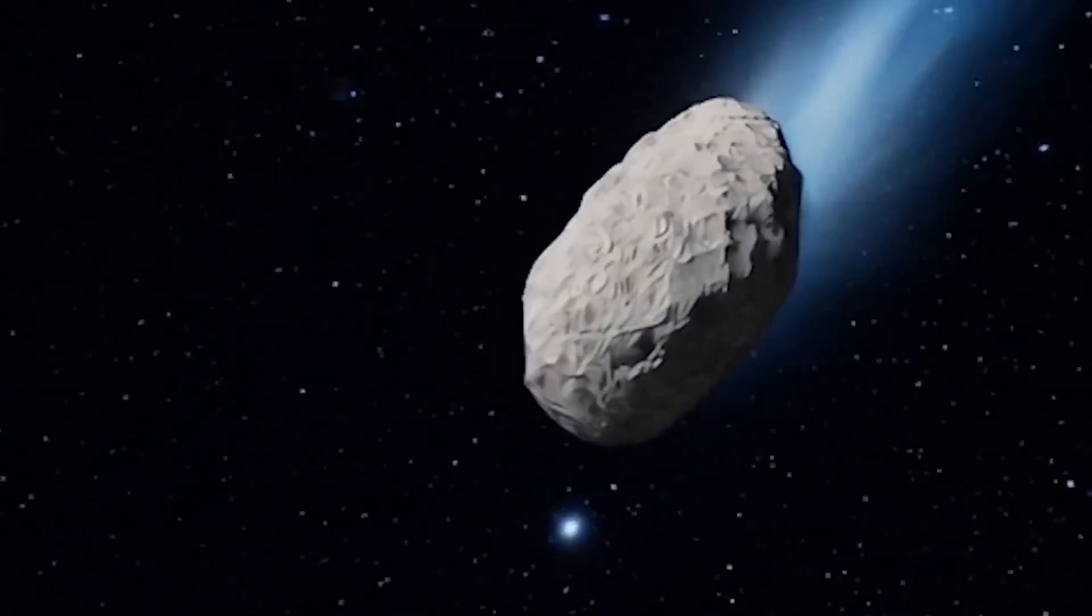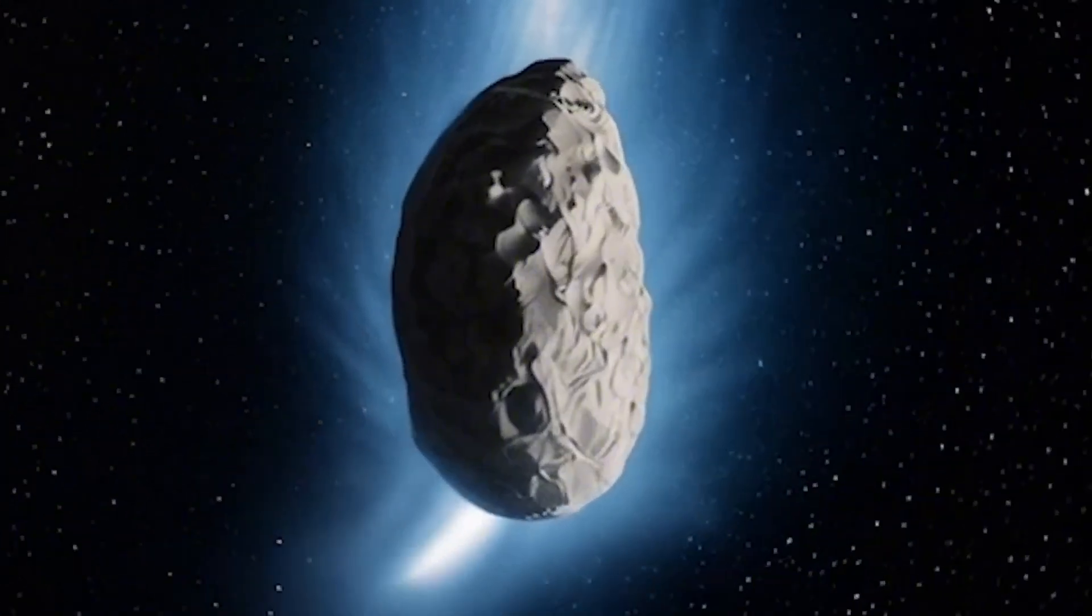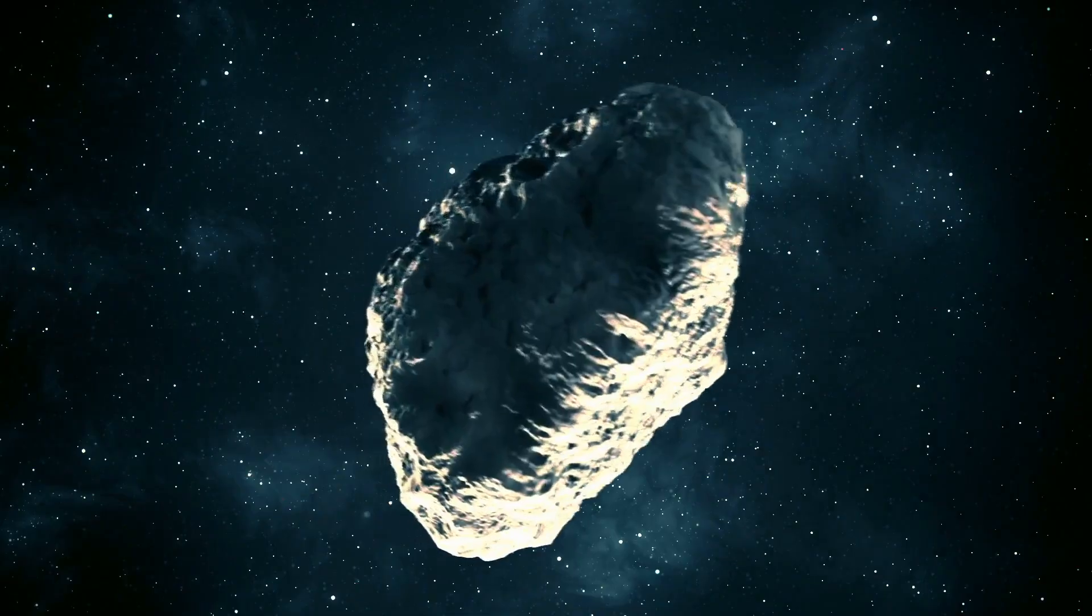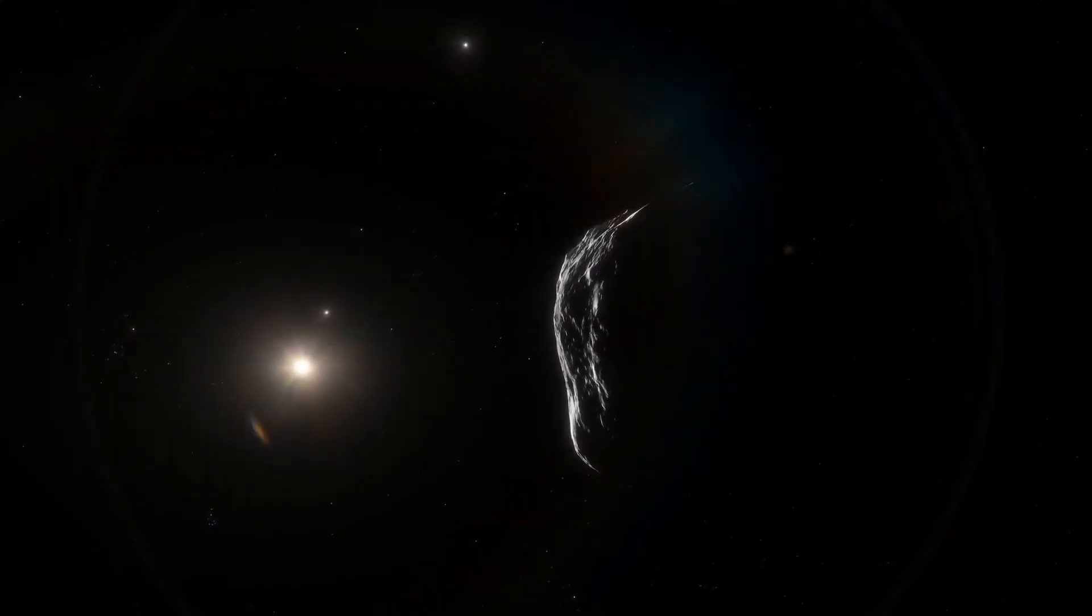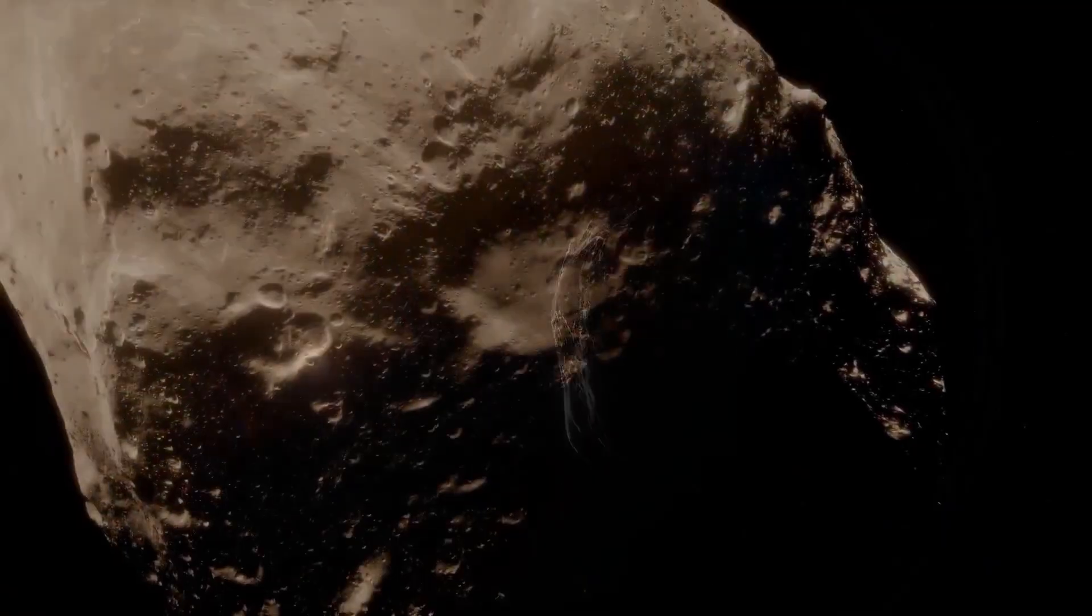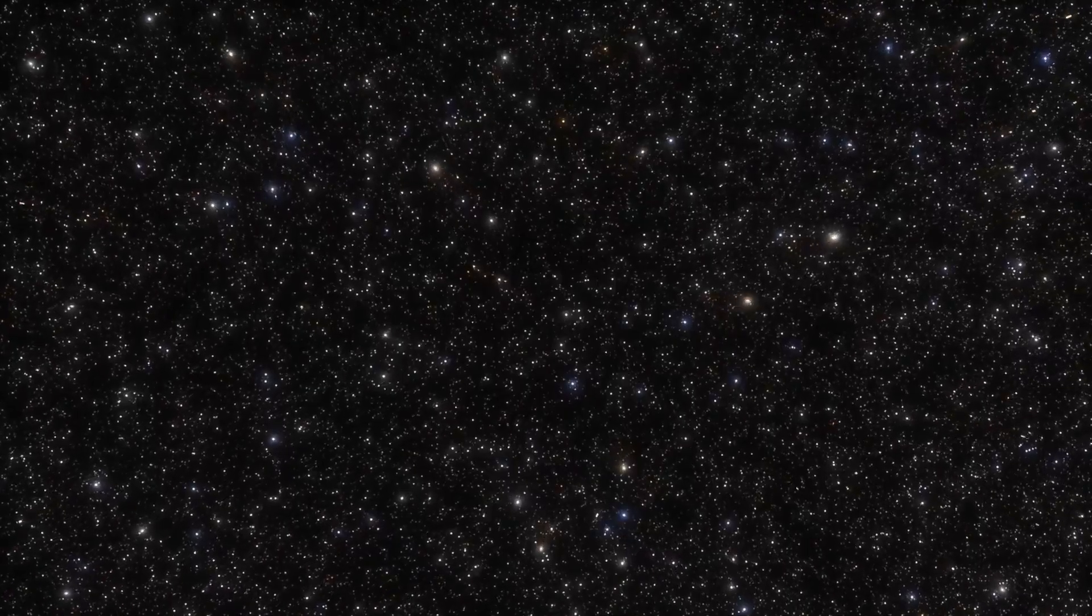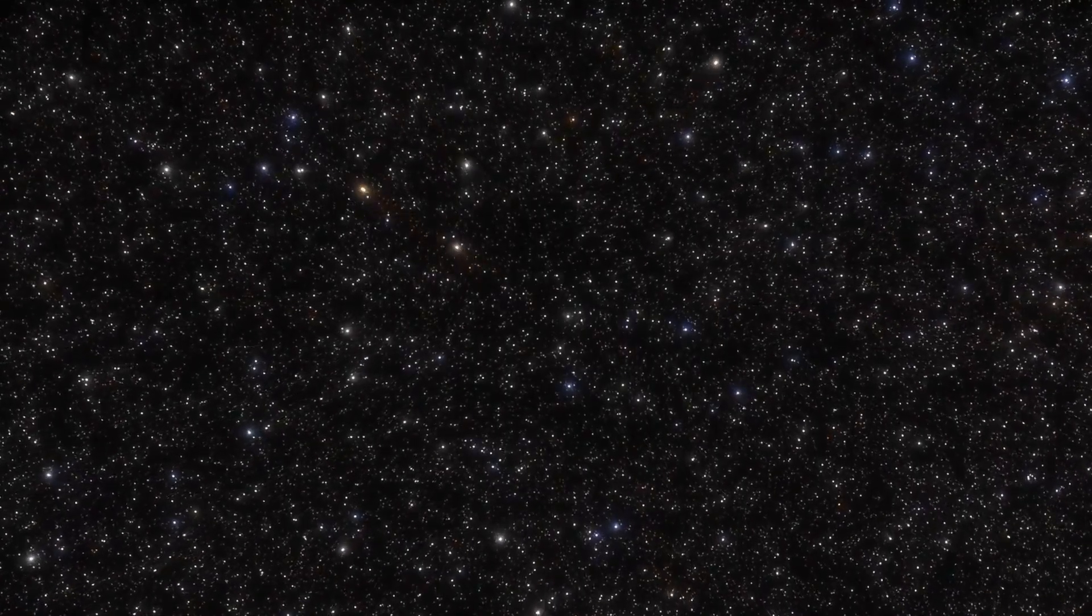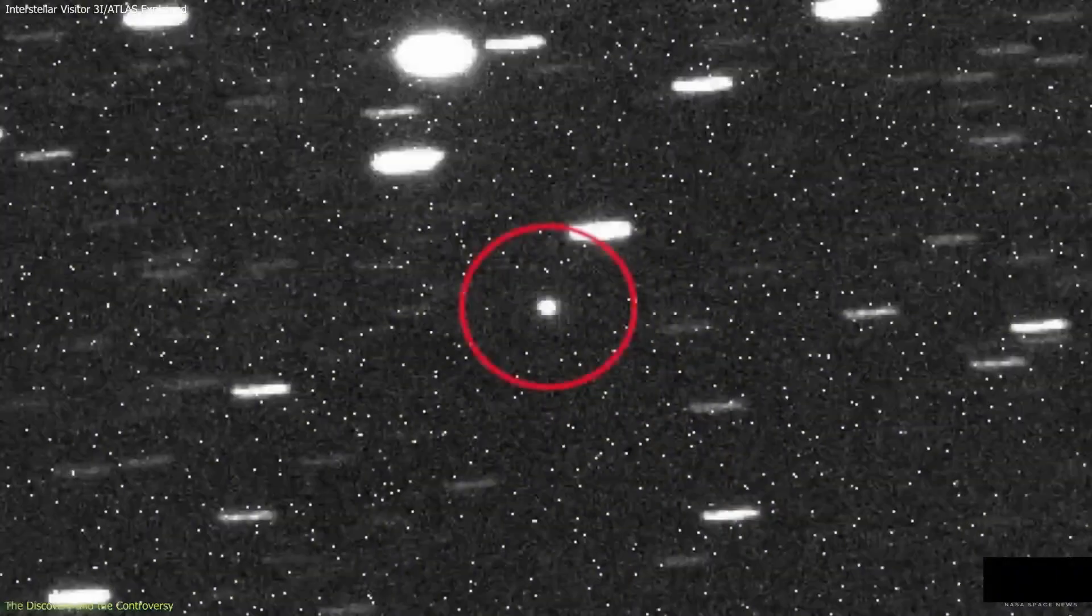Estimates of the object's size suggest that it could be far larger than its interstellar predecessors. Based on its apparent brightness and assumed reflectivity, 3I Atlas is believed to span between 2 and 5 kilometers in diameter, making it potentially 10 times larger than Oumuamua and several times larger than Borisov. That mass and density raise significant questions about how such a body could survive interstellar travel. Moving through the sparse but relentless haze of interstellar dust at tens of kilometers per second, an unprotected object could endure constant micrometeoroid bombardment. To remain intact, it must be either unusually cohesive or shielded by a hardened crust capable of dissipating immense kinetic energy over eons of exposure.